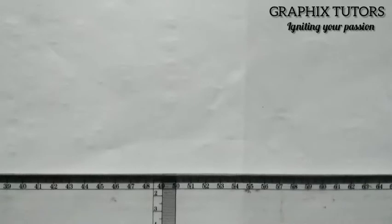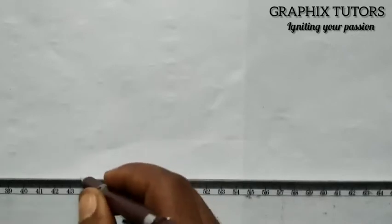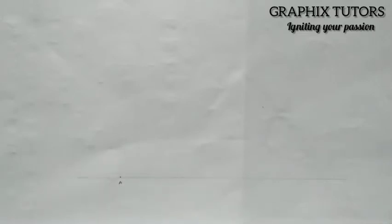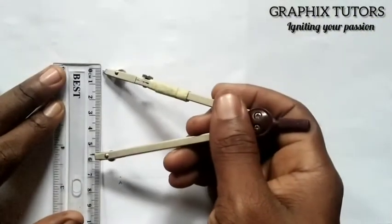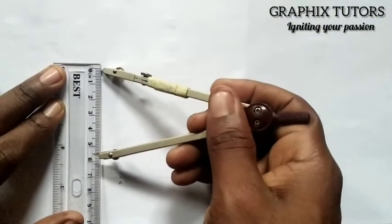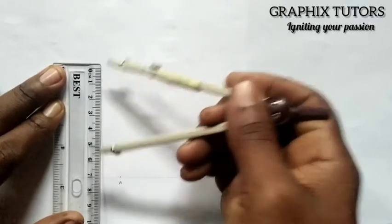So what I'm going to do here is this: I'm going to take my ruler and draw a straight, faint line. On that straight line, I'll mark a point — Point A. I'll take my ruler and compass, and I'm going to measure 60. So from 0, this is 60.